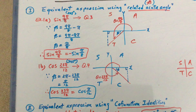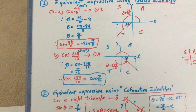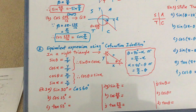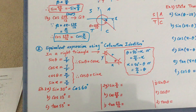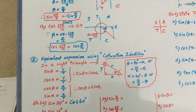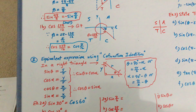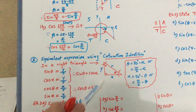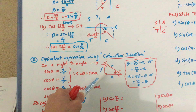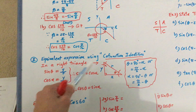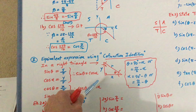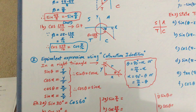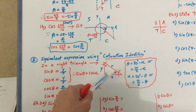That is the first type of equivalent expressions using the related acute angle. Moving on, the second type of equivalent expressions is what we call the co-function identities. In any given right angle triangle, we know that one of the angles must be 90 degrees. The remaining two other angles, theta and alpha, must sum to the other 90 degrees.